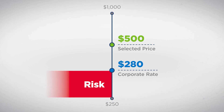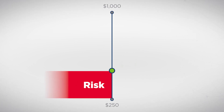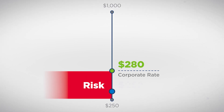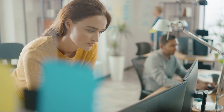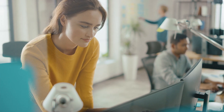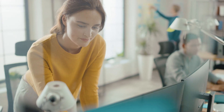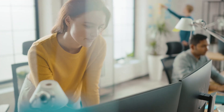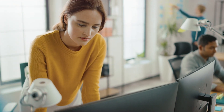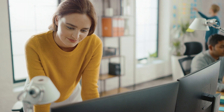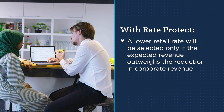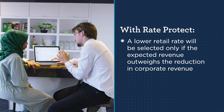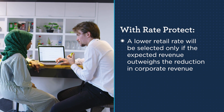Most corporate contracts include a clause stating that if their negotiated rate goes above the retail rate, their rate should equal or be discounted from the lower retail rate. With the Rate Protect feature in G3 RMS, revenue managers configure the applicable corporate products to be included in the optimization process. Advanced analytics determine if it's more profitable to drop the retail price given the potential impact on corporate business, ensuring a lower retail rate is only selected if the expected revenue gain is greater than the reduction in corporate revenue.